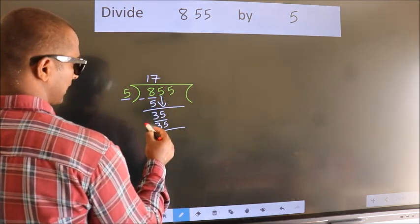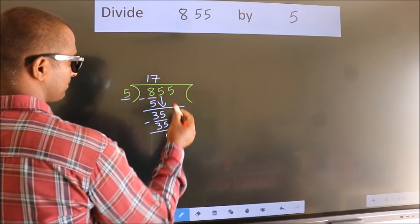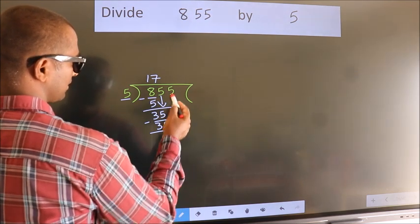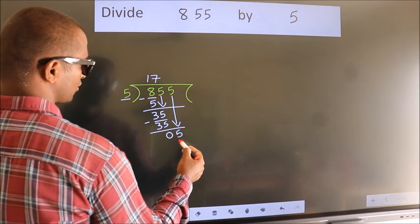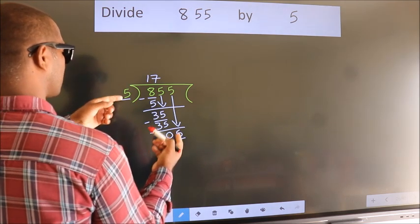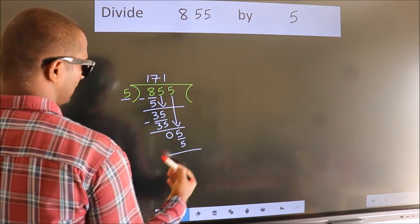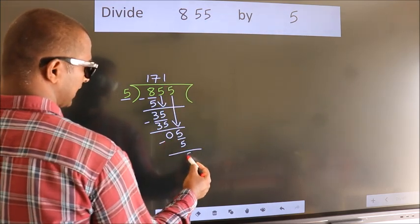Now, we subtract. We get 0. After this, bring down the beside number. So, 5 down. So, 5. A number close to 5 in 5 table is 5 once 5. Now, we subtract. We get 0.